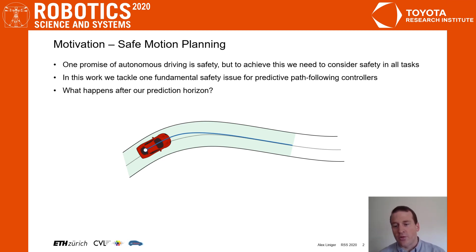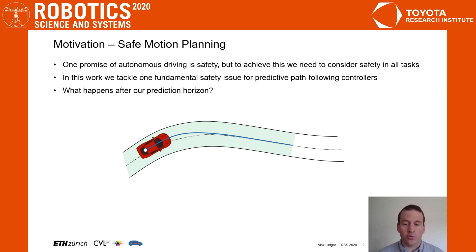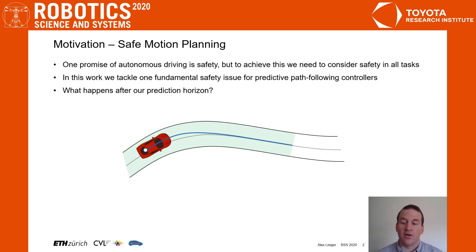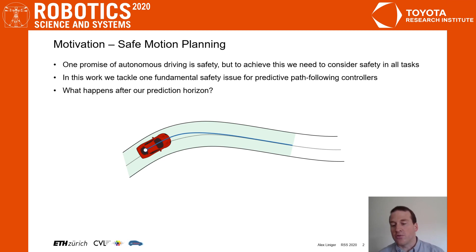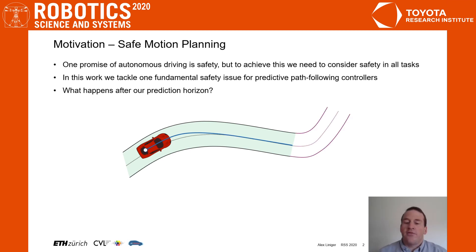In predictive controllers one big issue is that we don't know what will happen or how the world will look like after our prediction horizon. So we can plan a trajectory that remains within the road until the end of the horizon, but depending on how the road evolves we may not be able to stay within the road indefinitely. For example, if there is a sharp turn directly after the prediction horizon we may not have enough time to react once we see this turn.